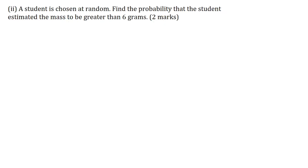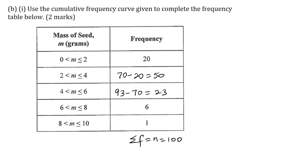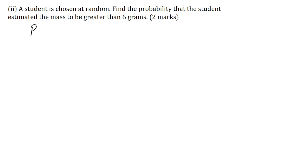Part B2: a student is chosen at random. Find the probability that the student estimated the mass to be greater than 6 grams, for 2 marks. From the frequency table, the number of students who estimated a mass of more than 6 grams is 6 plus 1, which is 7 students. So the probability of the mass being greater than 6 grams is equal to 7 divided by the total number of students, which is 7 over 100.